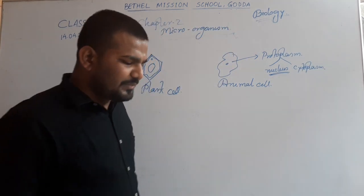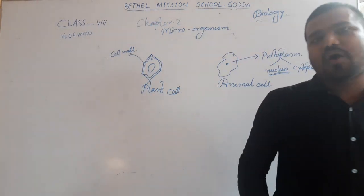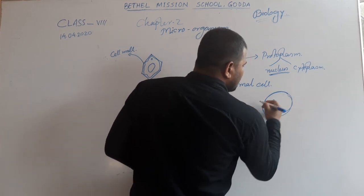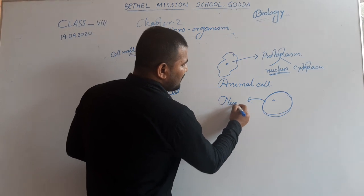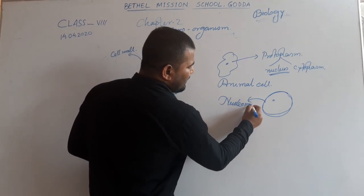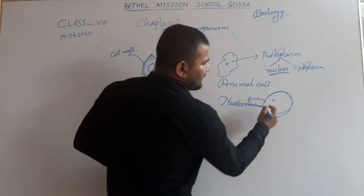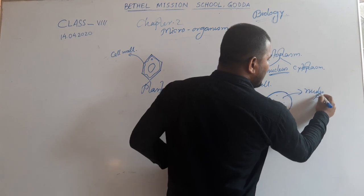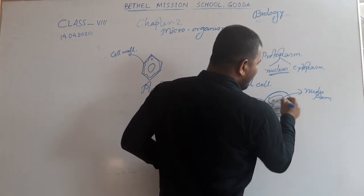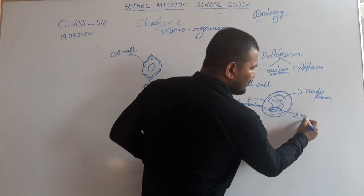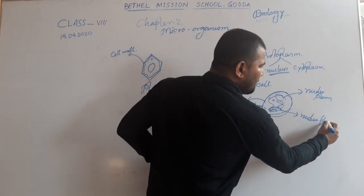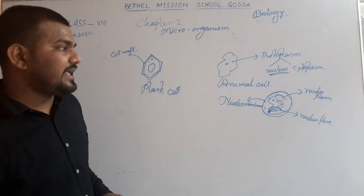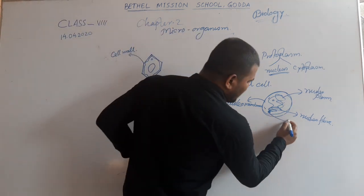The nucleus is the brain of the cell. The nucleus has four parts. The outer membrane of the nucleus is known as the nuclear membrane. The fluid present within the nucleus is termed as the nucleoplasm. The fiber present within the nucleus is known as the nuclear fiber. And one small dome-shaped memberless organelle present within the nucleus is termed as the nucleolus.